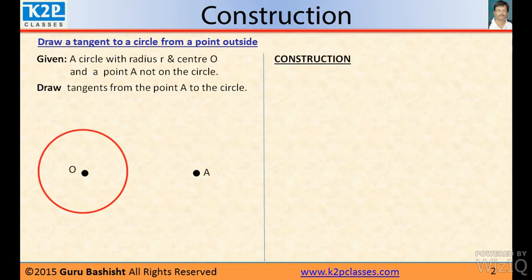The first step is draw a line OA. That is, join point A and point O.